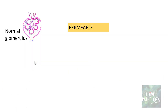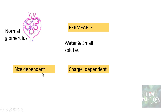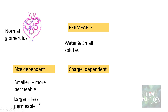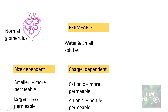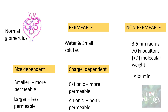What is the normal glomerulus permeable to? It is permeable to water and small solutes. This permeability is size dependent and charge dependent. The smaller the size, the more permeable; the larger, the less permeable. Charge dependent means the cationic ones are more permeable as compared to anionic, which are non-permeable. Remember that albumin is the one which should be absent in the glomerular filtrate.